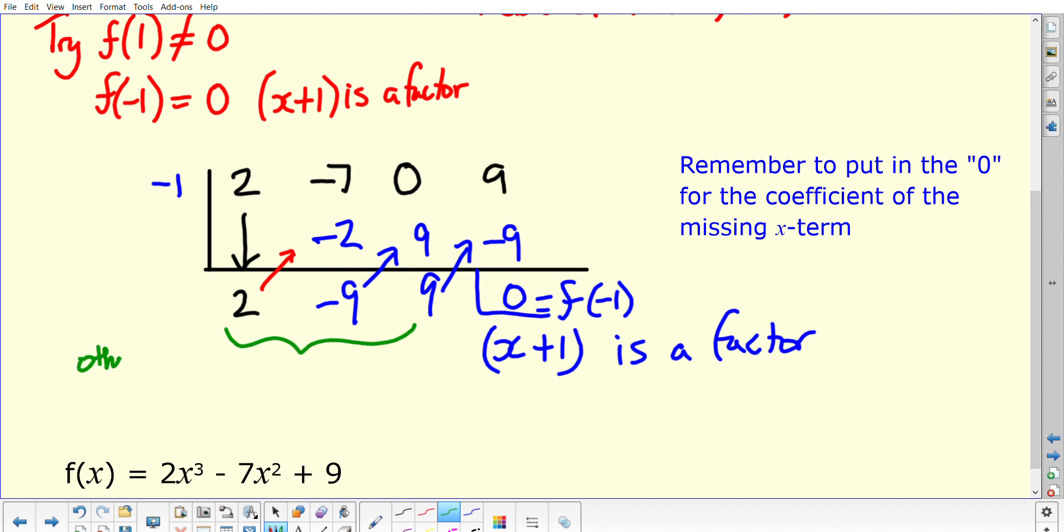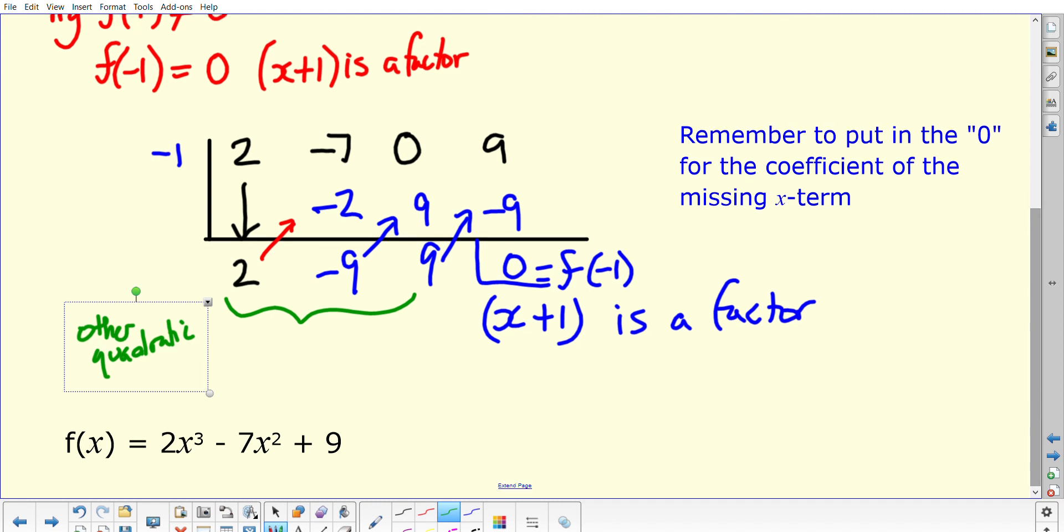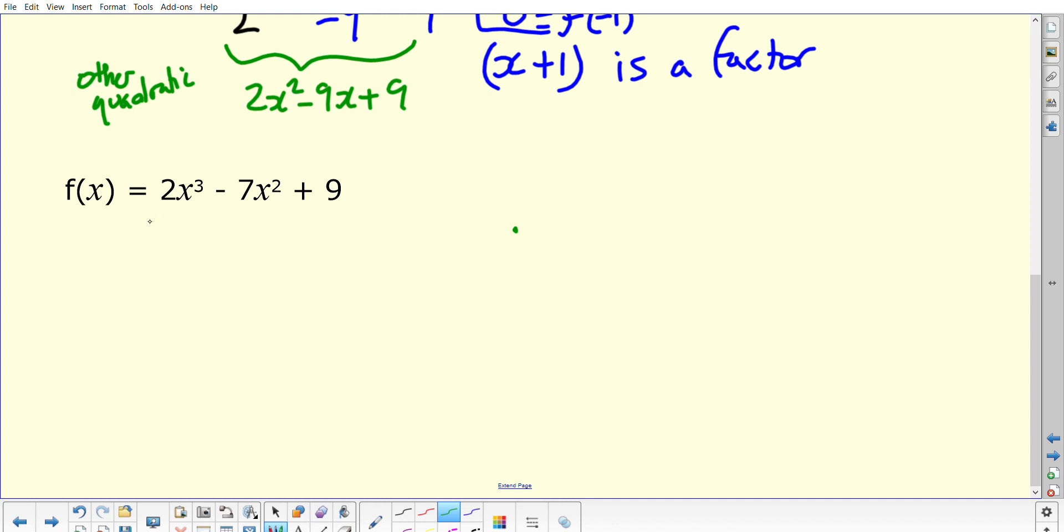The other factor will now have appeared at this point here, which will be your quadratic, and that would become 2x squared minus 9x plus 9. If we put all that together with our original function, that would mean we would have x plus 1 times 2x squared minus 9x plus 9. Then of course you need to factorize your 2x squared.